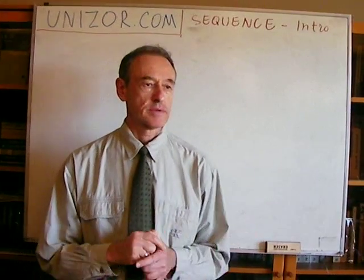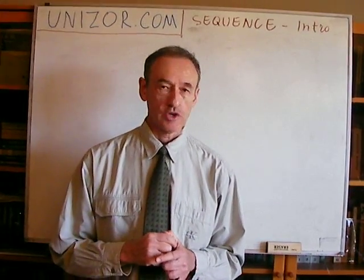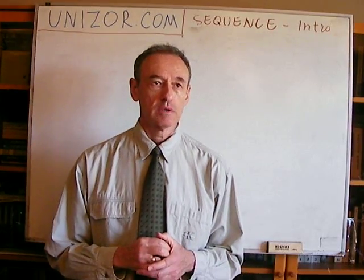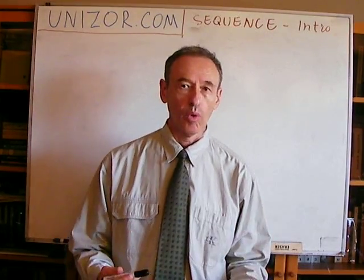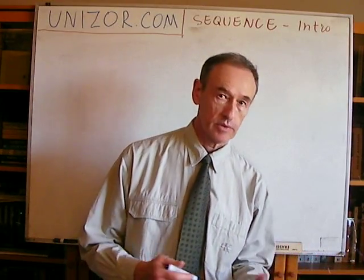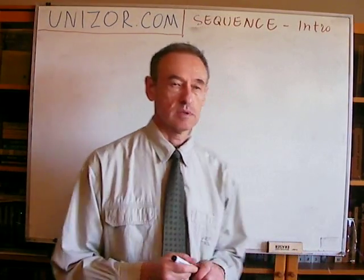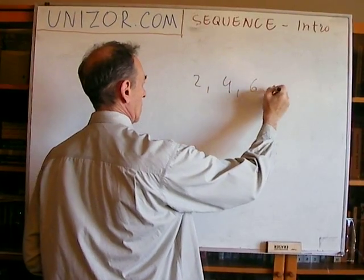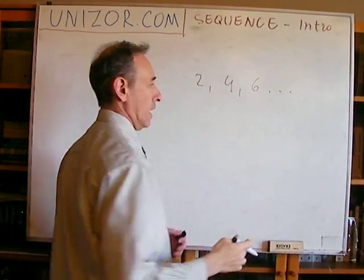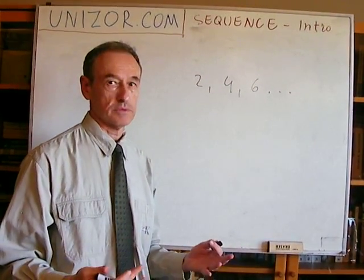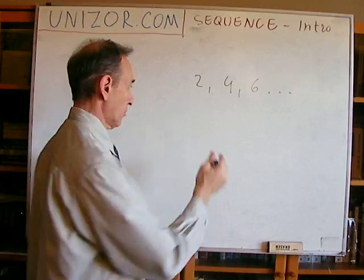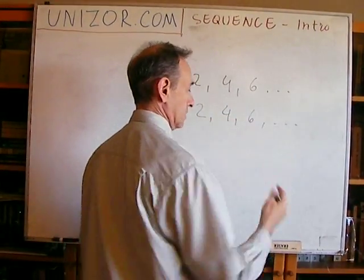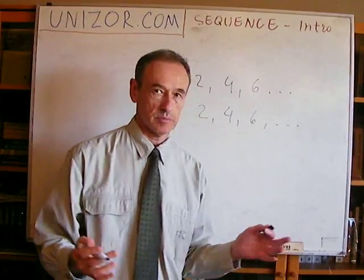Let me start with a question. What's the difference between a set of all even numbers and a sequence of all even numbers? They look the same, basically, right?